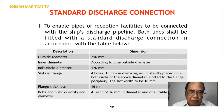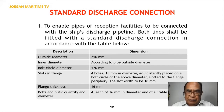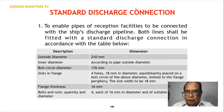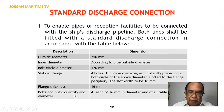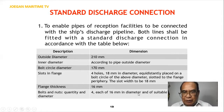The flange has four holes of 18 millimeters in diameter, equidistantly placed on the bolt circle of the above diameter, slotted to the flange's periphery. The slot width is 18 millimeters, the flange thickness is 16 millimeters, and the bolts and nuts are four of 16 millimeters in diameter with suitable bolts.